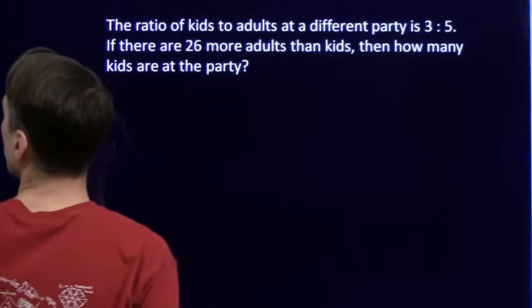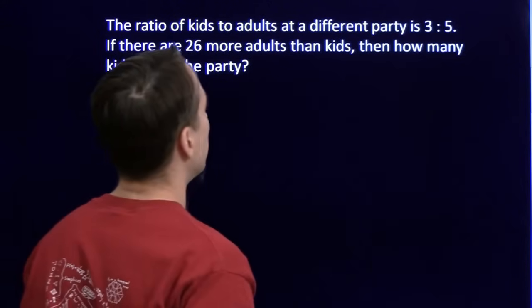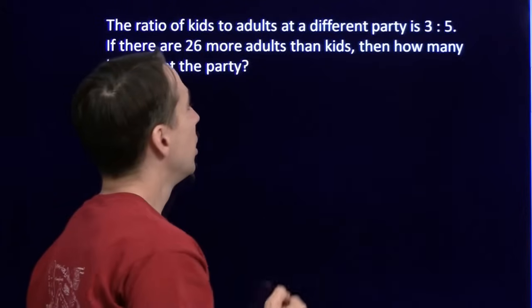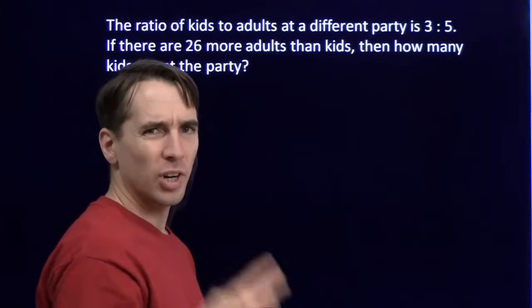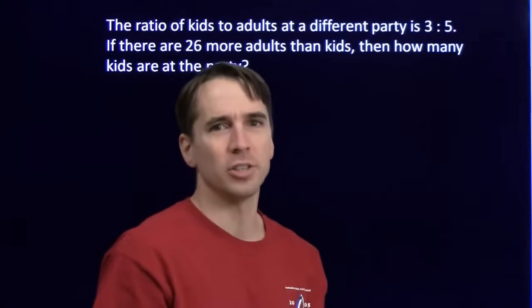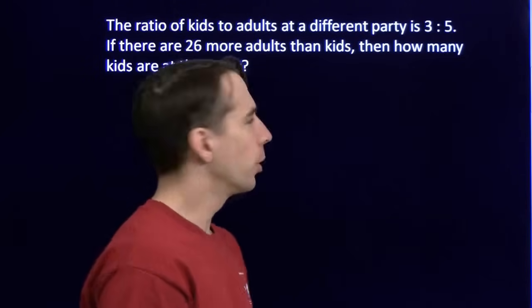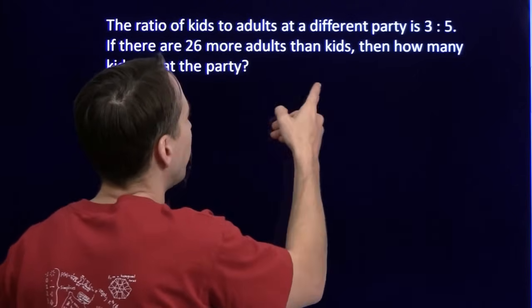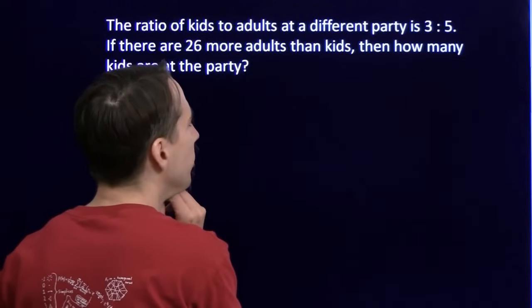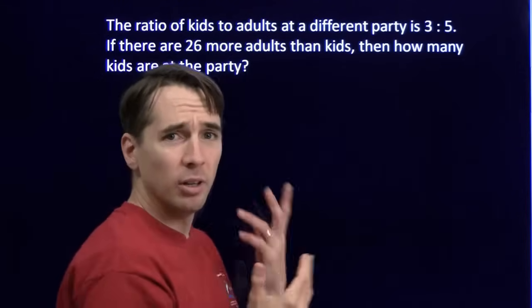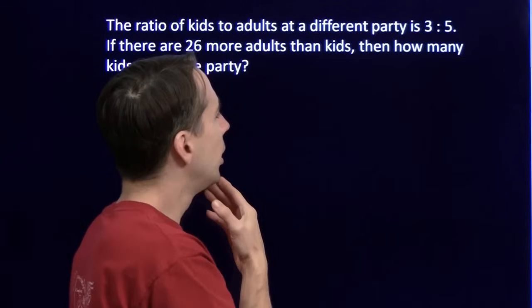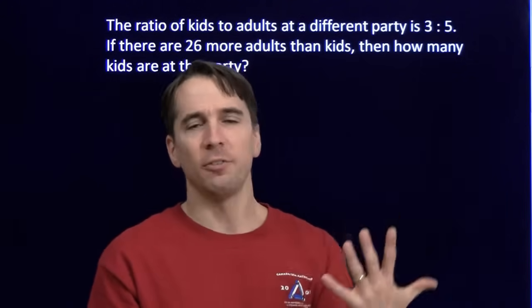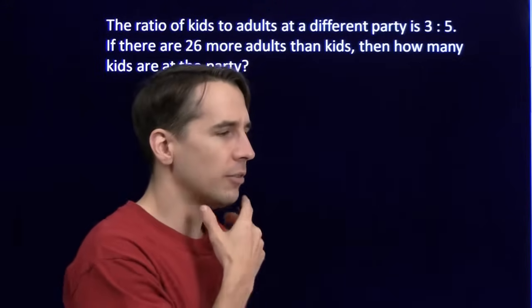Let's take a look at another ratio problem. Here we have kids to adults at a different party — the ratio is 3 to 5. That means for every 3 kids, there are 5 adults. This is going to be a boring party. If there are 26 more adults than kids, then how many kids are at the party? Let's approach this like we did the first problem and think about groups. In each group, we have 3 kids and 5 adults.